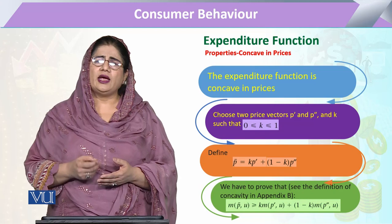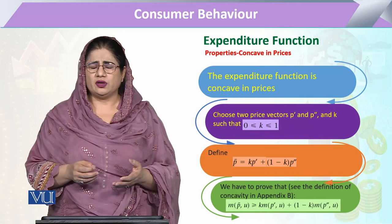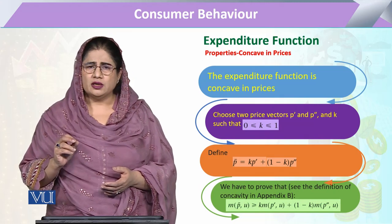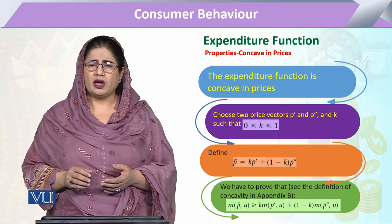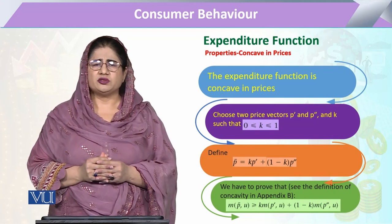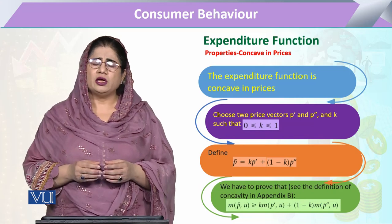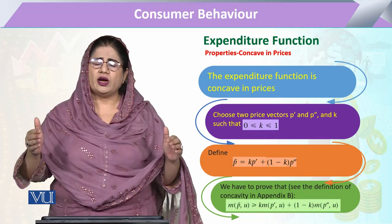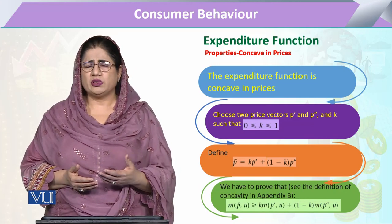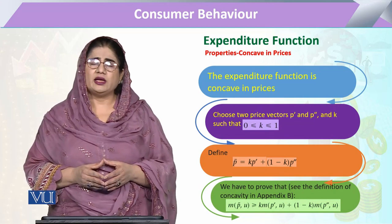With one price P prime we form the expression: k times P prime plus (1 minus k) times P double prime. When we sum up these two terms, the resulting price is P̄. We have to adjust at this P̄, where the consumer, somewhere between both points, attains maximum utility with minimum expenditure.